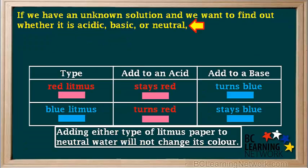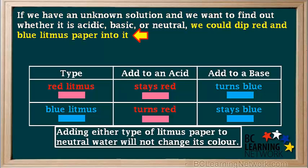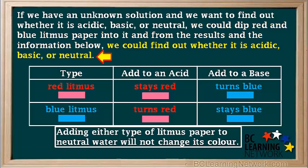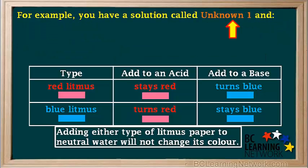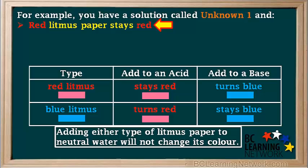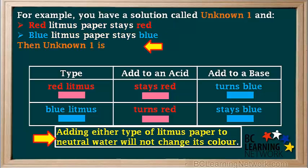We can conclude that adding either type of litmus paper to neutral water will not change its color. If we have an unknown solution and we want to find out whether it's acidic, basic, or neutral, we could dip red and blue litmus paper into it. For example, with Unknown 1, the red litmus paper stays red and the blue litmus paper stays blue. Because neither the red nor blue litmus changes color, we now know that Unknown 1 is neutral.